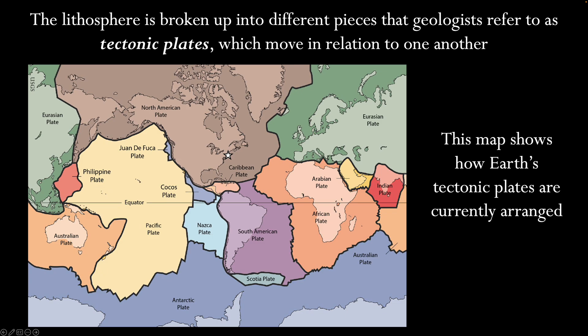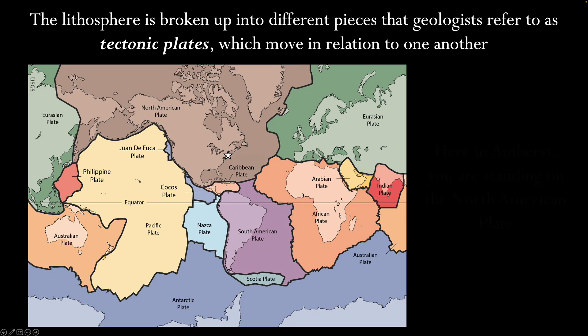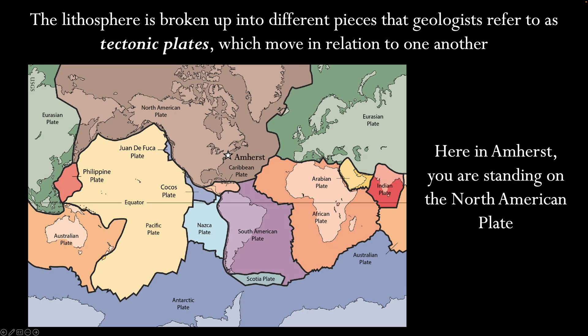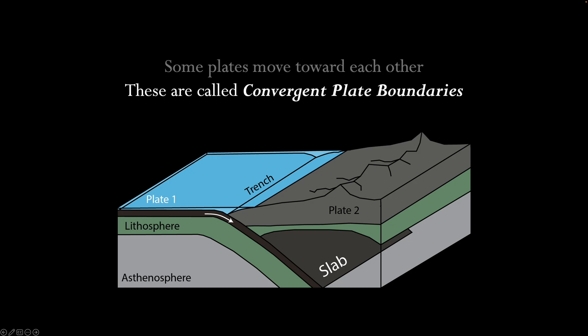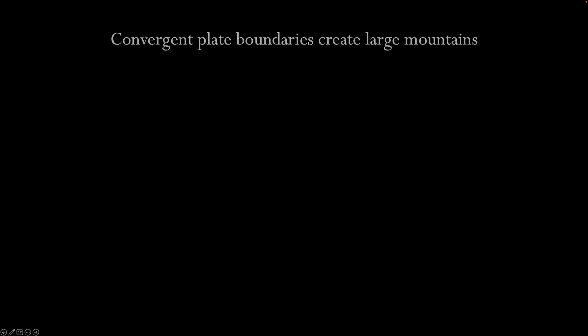This map shows how Earth's tectonic plates are currently arranged. Here in Amherst, you are standing on the North American plate. In some places, the plates are moving toward each other — these are called convergent plate boundaries. The diagram shows a convergent plate boundary where one plate sinks or subducts beneath the other. It is this sinking or subduction that ultimately drives the motion of tectonic plates.